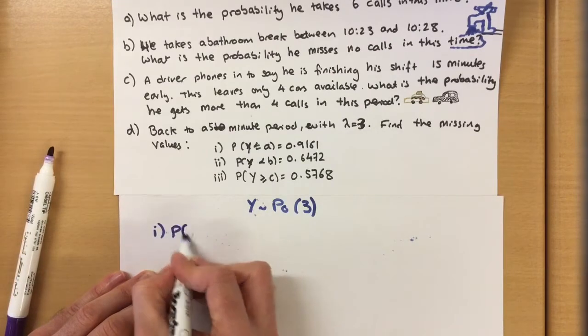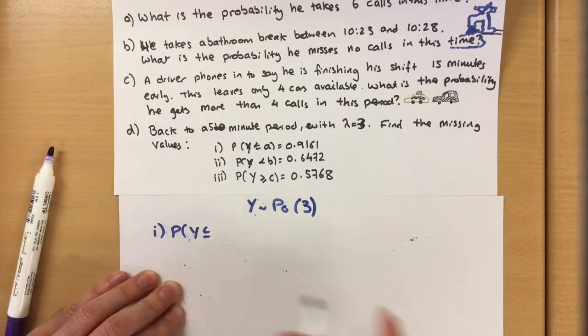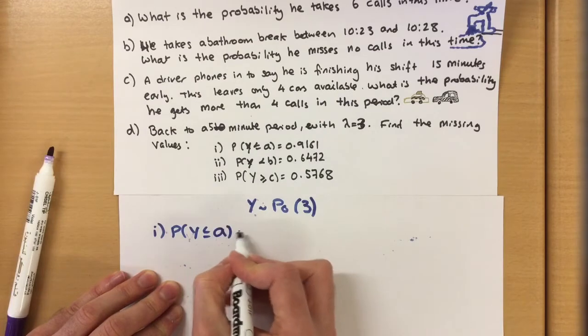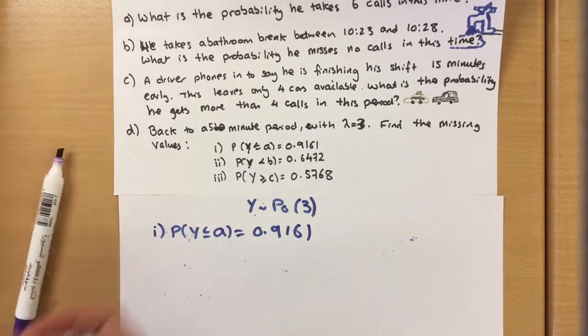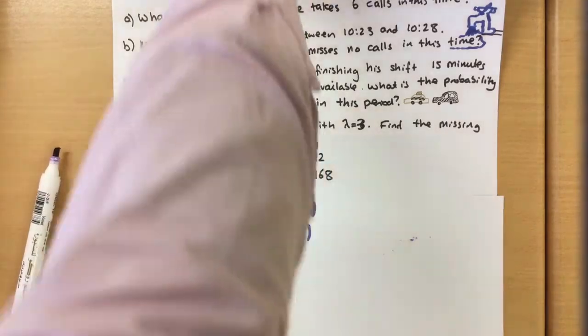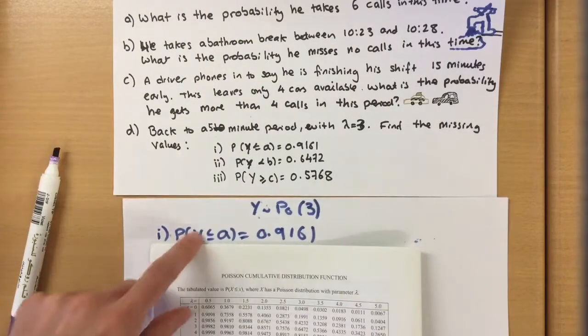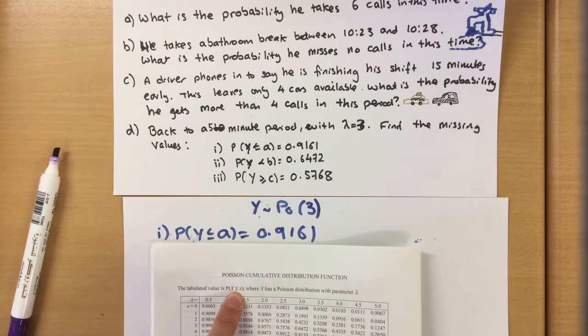It defines some values in reverse now, so using a table backwards if you like. So the first one is probability that Y is less than or equal to some strange number a equals 0.9161. This is probably the easiest of them. Use it straight from our table because this setup matches our table setup here, there's a less than or equal to scenario.